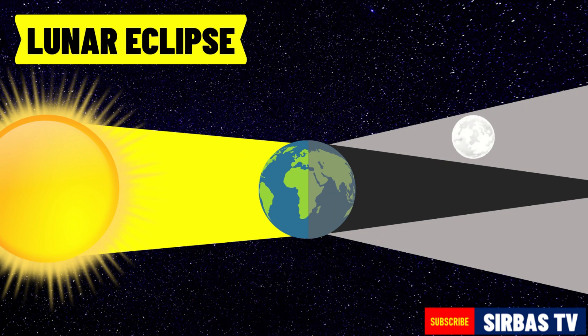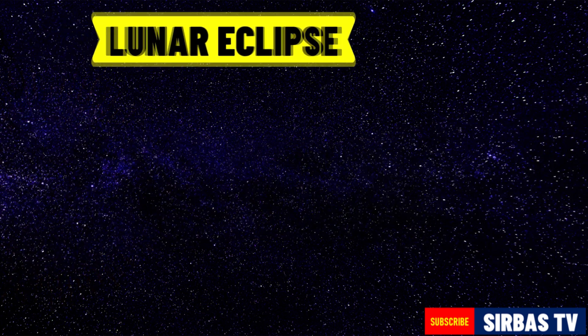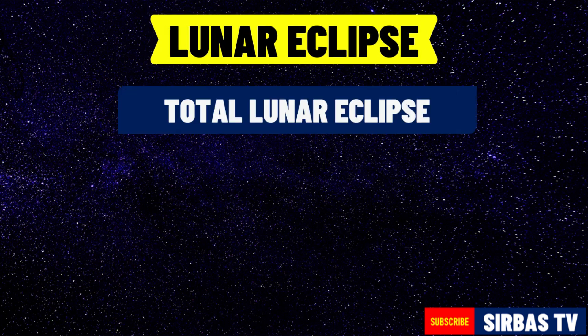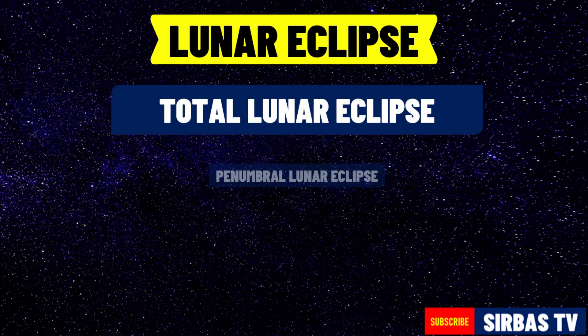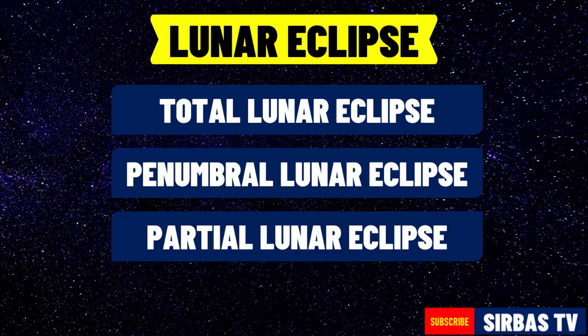The type of lunar eclipse that can be observed depends on the position of the moon on the shadow of the earth. The three types of lunar eclipse are total lunar eclipse, penumbral lunar eclipse, and partial lunar eclipse.